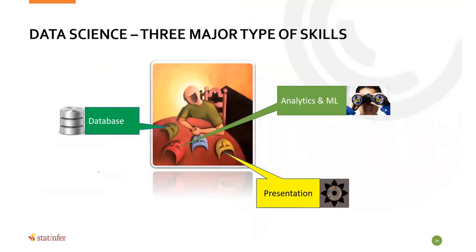There are three major types of skills to become a data scientist. You need to have the skill of database management, analytics and machine learning, and the final one is presentations, visualizations, and storytelling. These are the three major types of skills to become a data scientist.